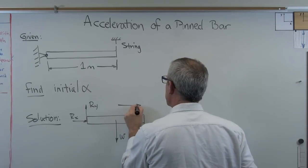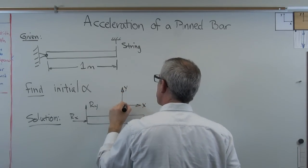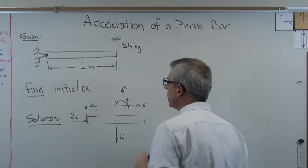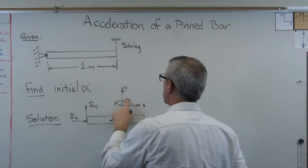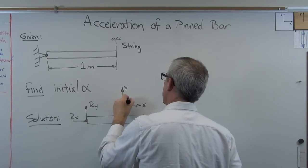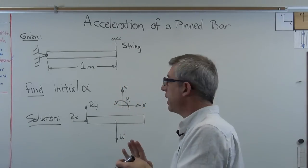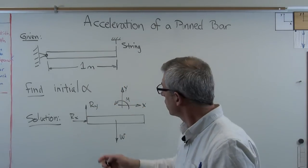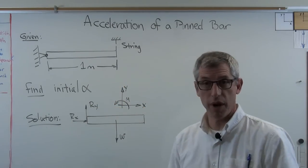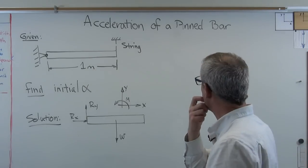And just to keep the bookkeeping clean here, there's the positive sign convention. That's the coordinate system I'm using. And there's a positive moment right there. So positive y, positive x, positive moment. So I've got my free body diagram, and I've got my positive sign convention. Now what?